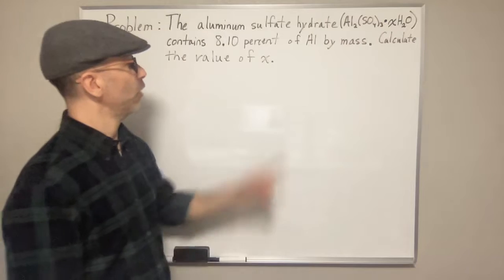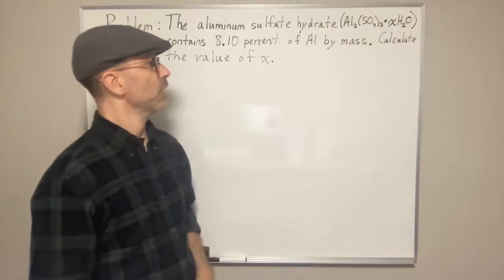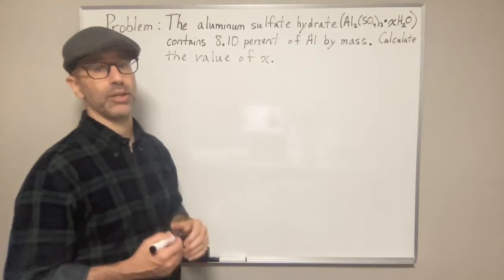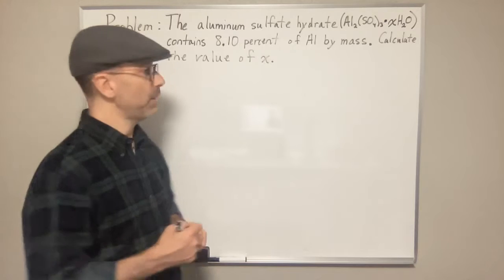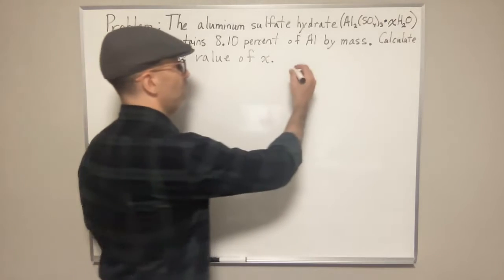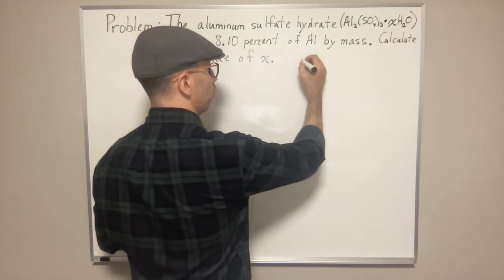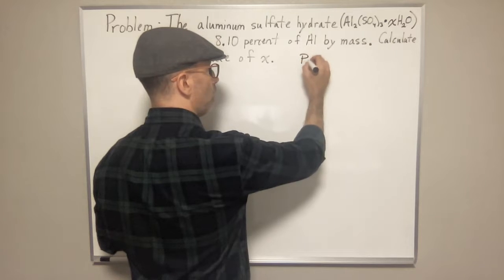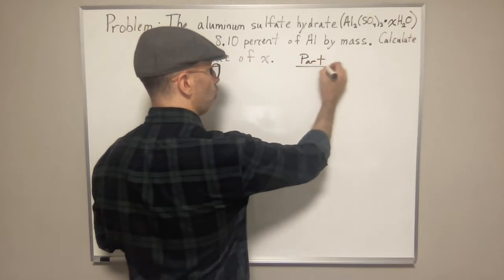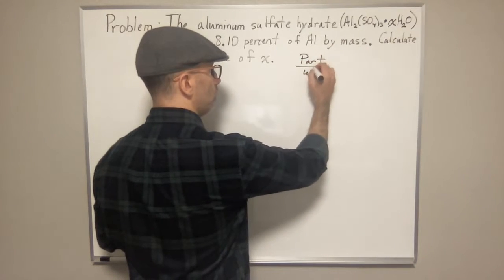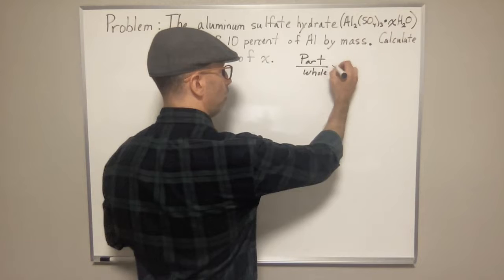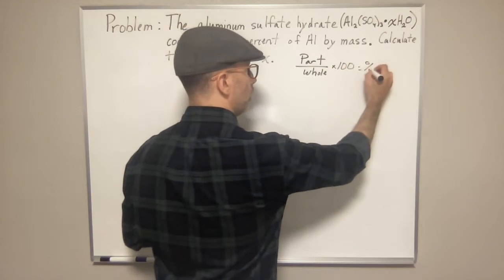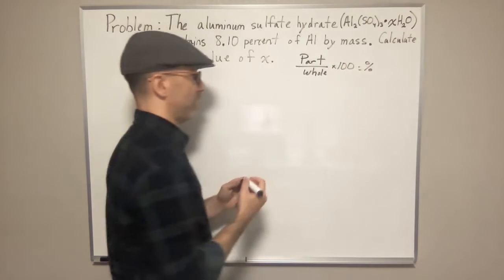So we want to know the mole ratio between the number of waters in your substance versus this amount here. How do we do this? Well, they give you a percent and we can use that to our advantage. The general formula for a percent is part over whole multiplied by 100, and that gives you the percent.